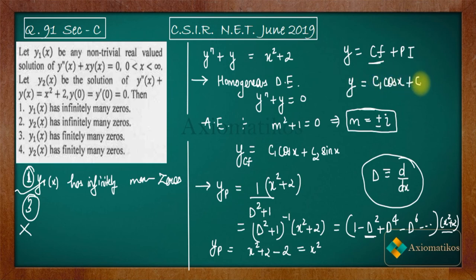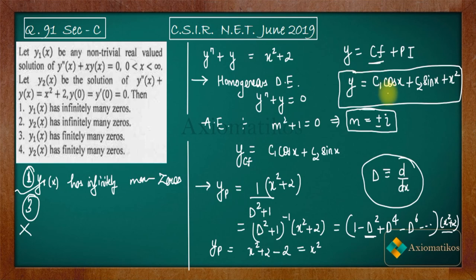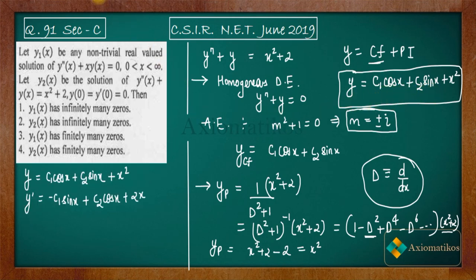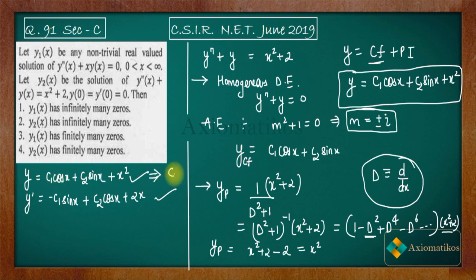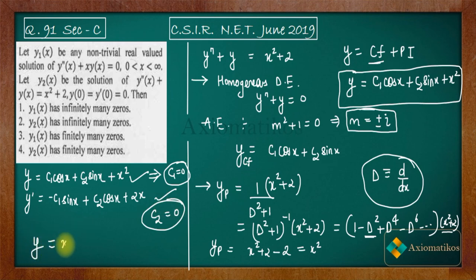The complete solution is y = c1·cos(x) + c2·sin(x) + x². Applying the initial condition y(0) = 0 gives c1 = 0. Taking the derivative and applying y'(0) = 0 gives c2 = 0. Therefore the solution is simply y2(x) = x².